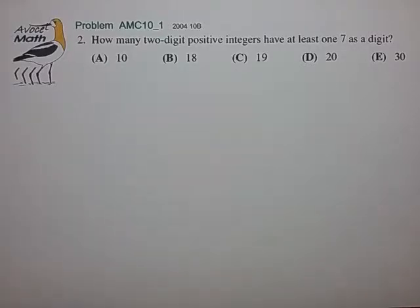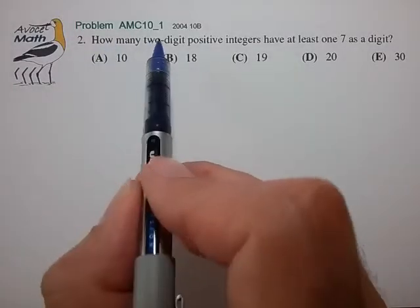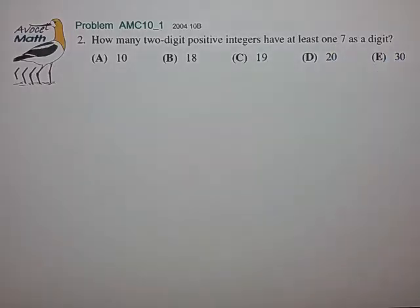Hi, welcome to Avocet Math. In this video we're going to look at one of the problems from our set of AMC 10 counting problems. So let's see what we have. How many two-digit positive integers have at least one 7 as a digit?